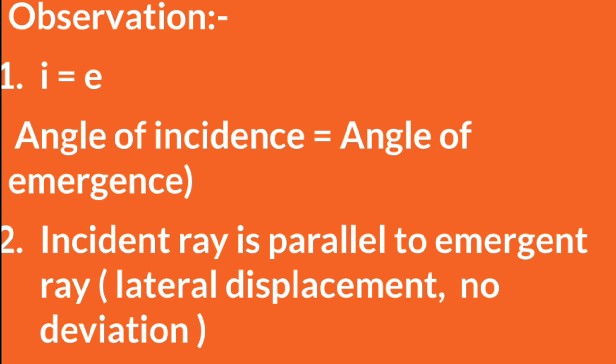So these are the two main observations: first is angle of incidence equal to angle of emergence, and second, incident ray is parallel to the emergent ray, meaning there is only a lateral displacement of light but no deviation. There is no change in the angle with respect to the glass slab. This is a very important experiment, friends, for your board exam. And I hope you had fun doing it at home. Even though you cannot attend school or lab, you can easily do it at home.